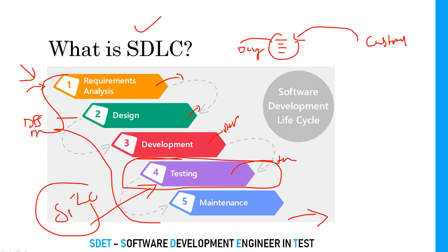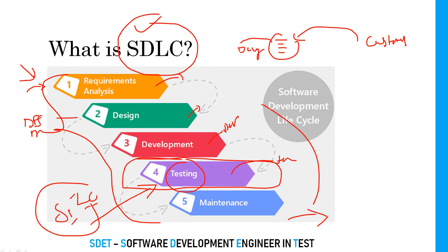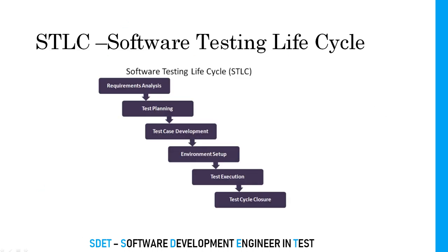SDLC is the overall process — it describes the complete software development process. Complete software development includes not only development but all phases. But Software Testing Lifecycle, STLC, mostly talks about the testing part: how we need to test, what testing activities we have, what process to follow, and what documents we should have. STLC is a part of SDLC.